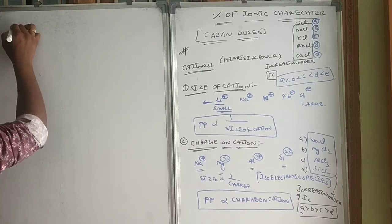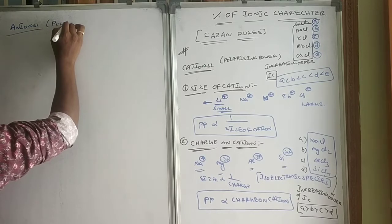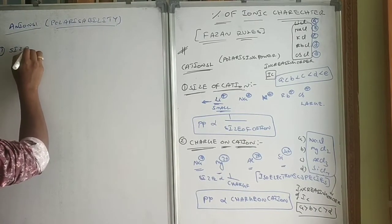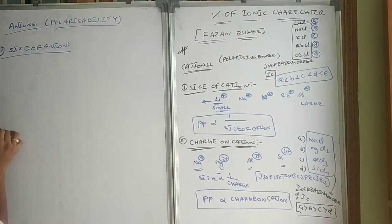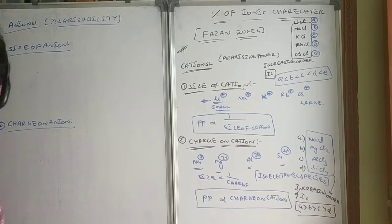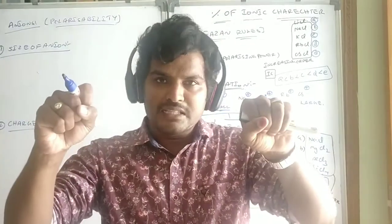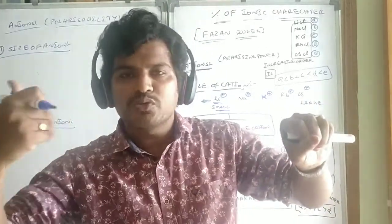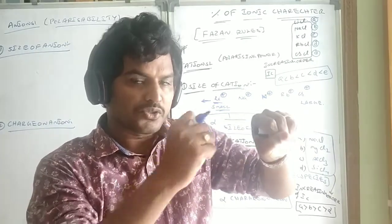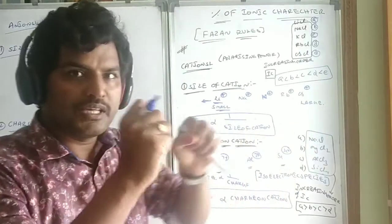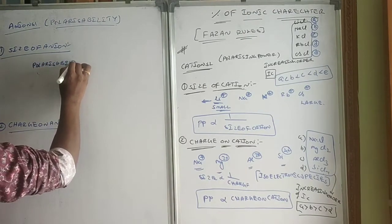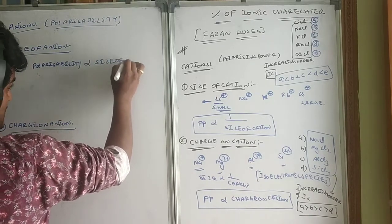Now let us discuss with respect to anions — polarizability. Polarizability depends on the size of the anion and the charge on the anion. As the size of the anion increases, the nucleus-to-valence-electron distance increases, so the other nucleus can pull that electron very easily. When an electron is close to the nucleus, another nucleus cannot pull it easily. So polarizability is directly proportional to the size of the anion.